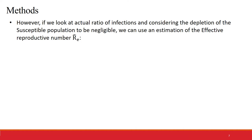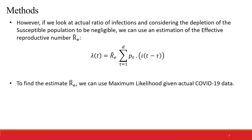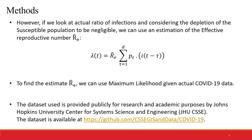However, we can look at the actual ratio of infections in the dataset and consider the depletion of susceptible population to be negligible. Then we can use the estimation of the effective reproductive number R hat E. We can use likelihood estimation with actual COVID-19 data. The dataset used is provided publicly for research and academic purposes.